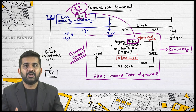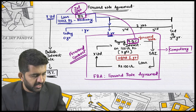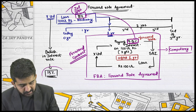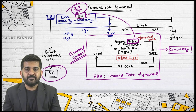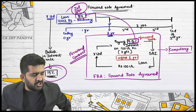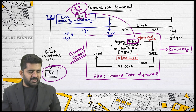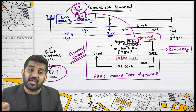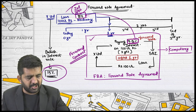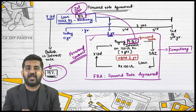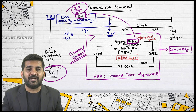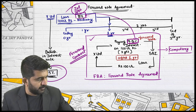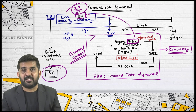Say the rate of interest after one year actually becomes 15%. You have already entered into a forward rate agreement. At what rate will you be getting the loan? 9.5%. This is not an optional contract.